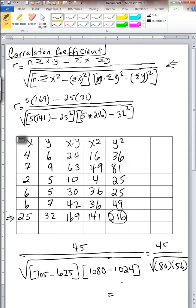So now we have 45 divided by square root of 80 times 56 is 4480.